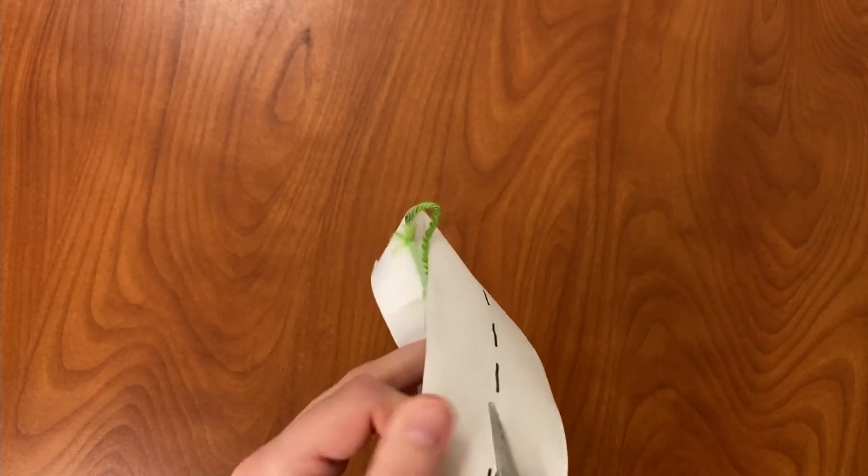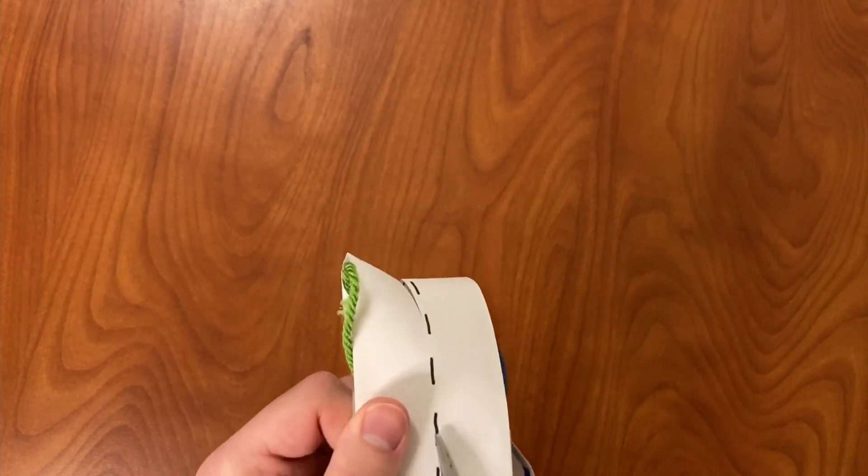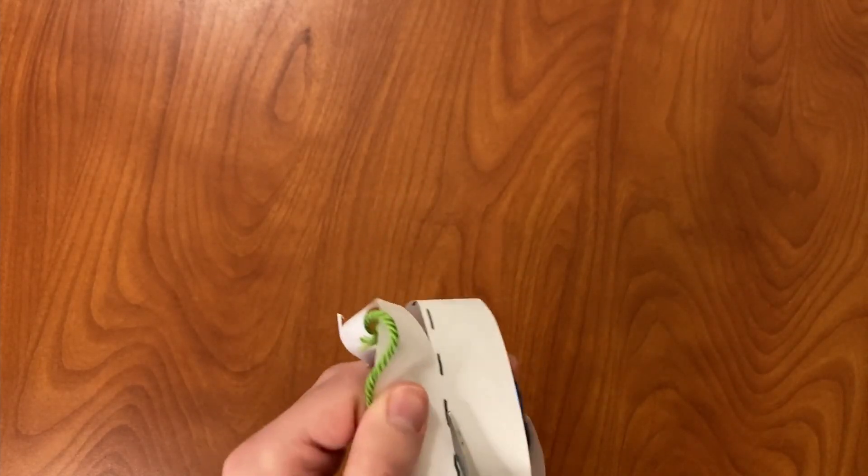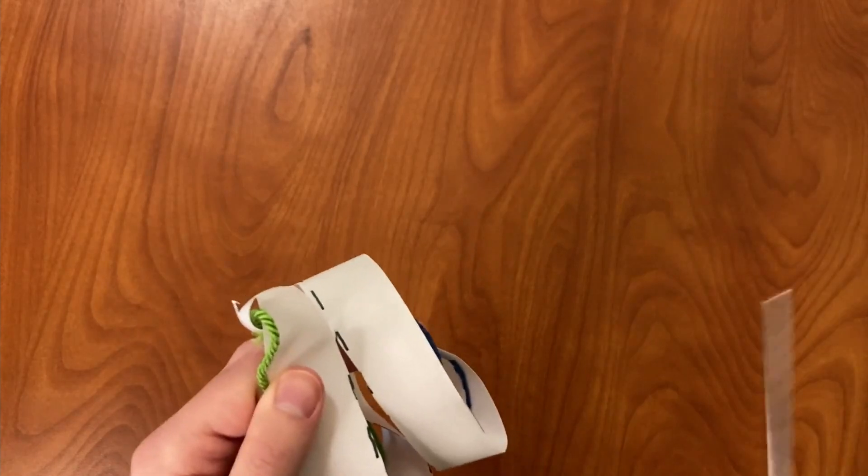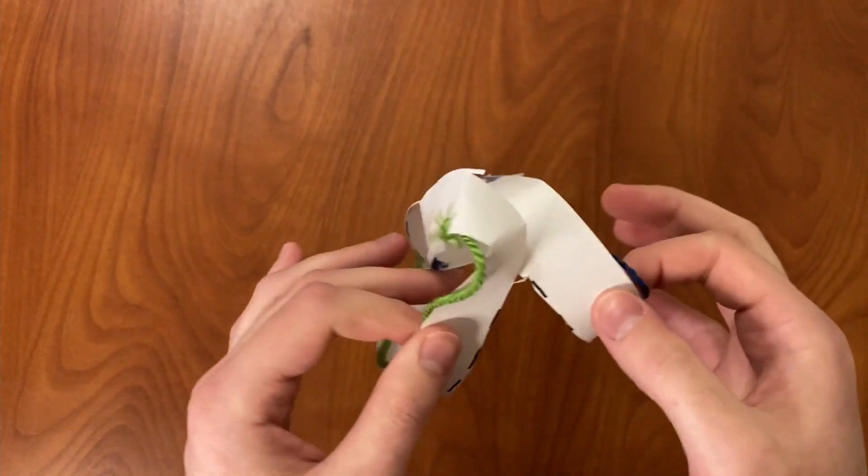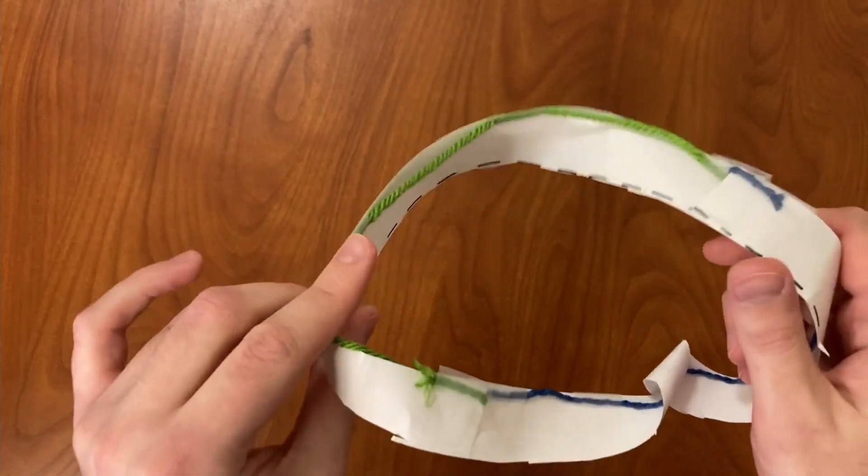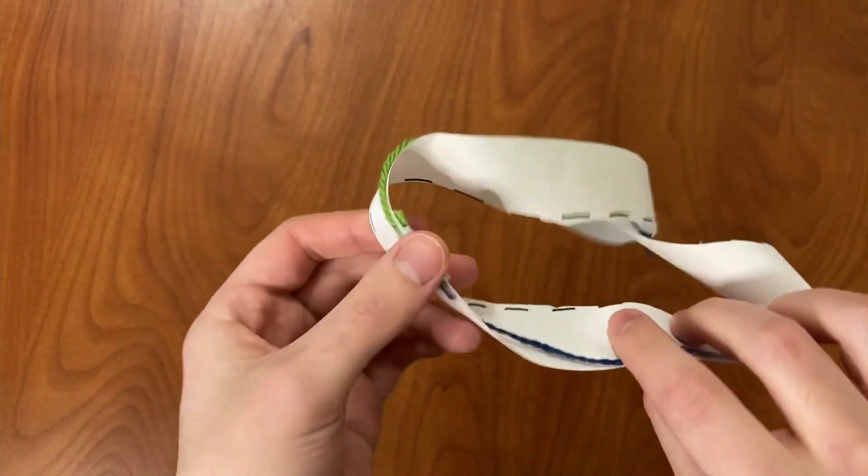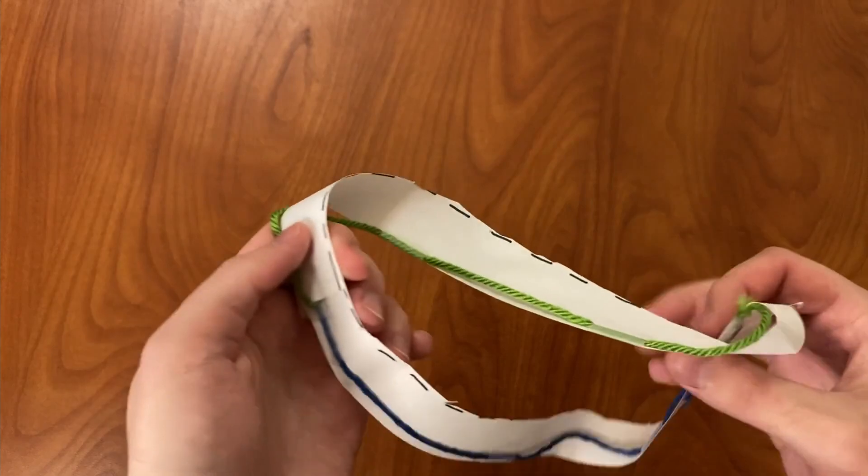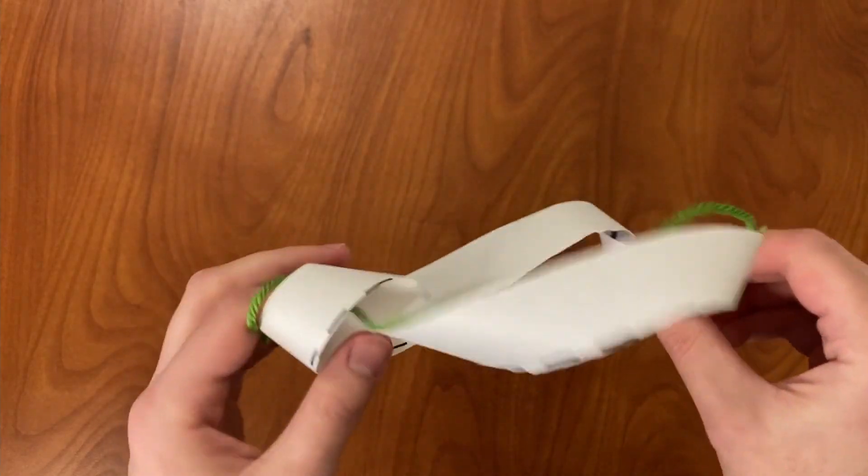When we cut down the middle of the Mobius strip, we never cut through the edge, so it has to stay connected. Now our loop has two edges, one edge which was the original edge of the Mobius strip, and the other edge which was the center of the Mobius strip.